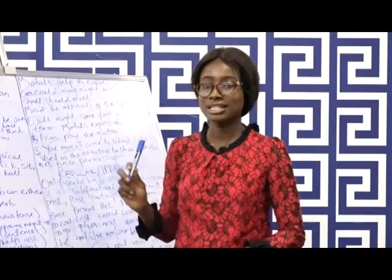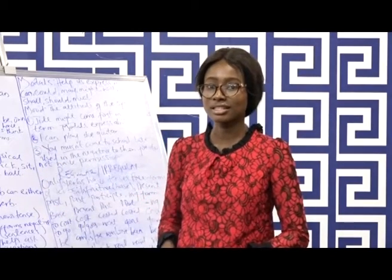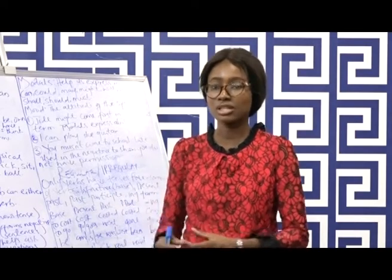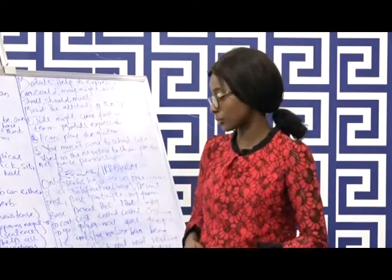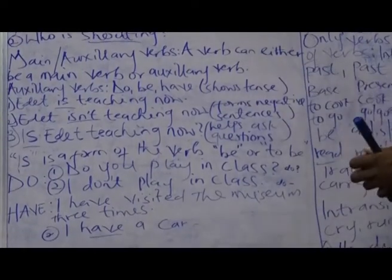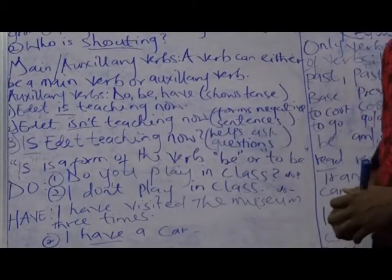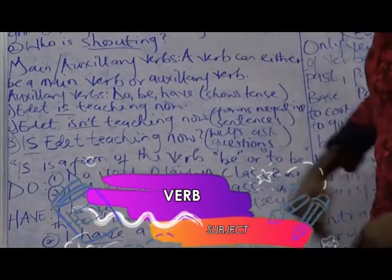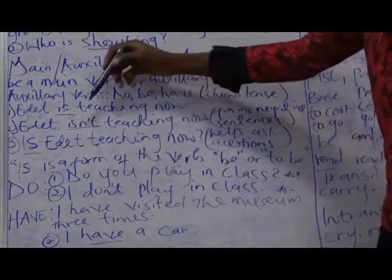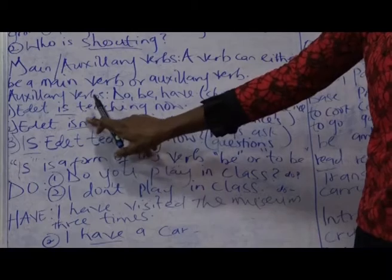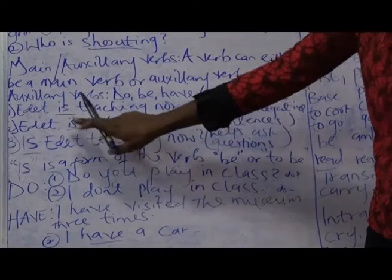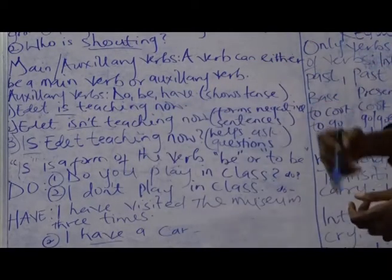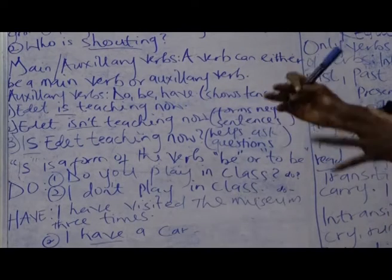You should know that it's only verbs that can have tenses. Verbs are the only parts of speech that can tell us about tense — whether something is happening in the present, happened in the past, or is going to happen in the future. Auxiliary verbs also help us form sentences in the negative: 'Edit isn't teaching now.' 'Isn't' is the auxiliary verb, a contraction of 'is not.' This apostrophe shows that a letter is missing.